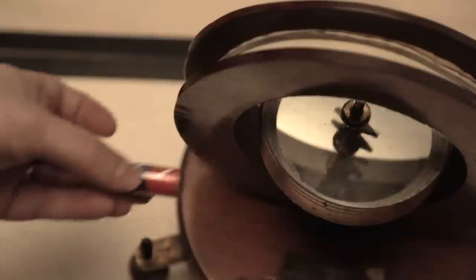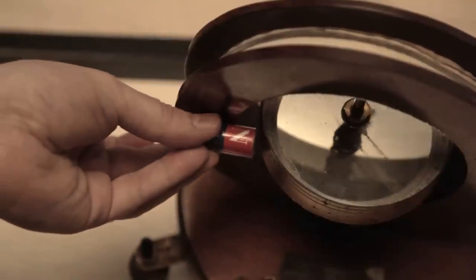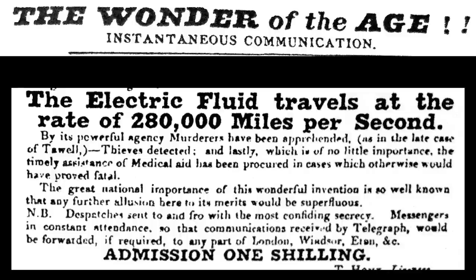And over time, the signaling rate was incrementally improved. One improvement was to add a small permanent magnet to the outside of the coil. This helped pull the needle back to neutral position after each deflection. And these designs led to a wide range of needle telegraphs which were deployed across Europe.